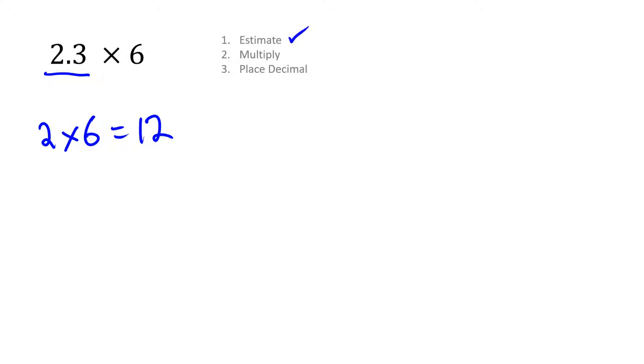Now let's go ahead and multiply. So we set up our question without the decimal: 23 times 6. Notice I don't have the decimal in here. Let's multiply. 6 times 3 is 18, carry the 1. 6 times 2 is 12, plus 1 is 13. So 138 is our answer. Now we've multiplied.